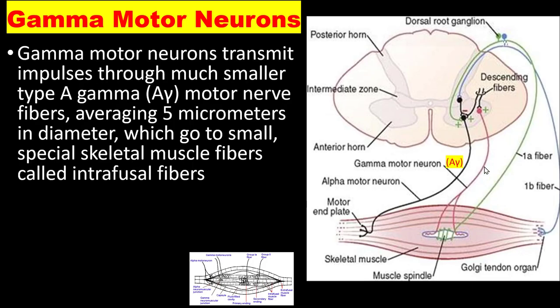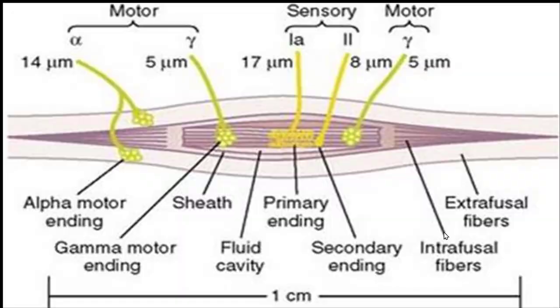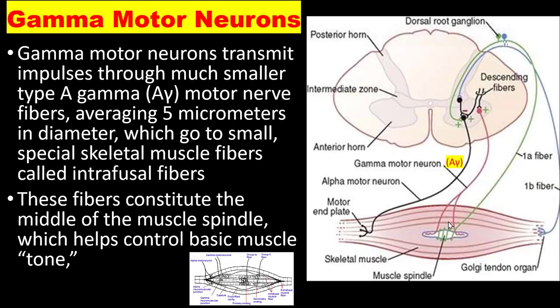Gamma motor neurons transmit impulses via type-A gamma motor neuron fibers averaging 5 micrometers in diameter, which go to small special skeletal muscle fibers called intrafusal fibers. The gamma motor neuron goes directly to a special receptor — the muscle spindle — located in the belly of the muscle. The intrafusal fibers are small and innervated by gamma motor neurons. These fibers constitute the middle of the muscle spindle, which helps control basic muscle tone.